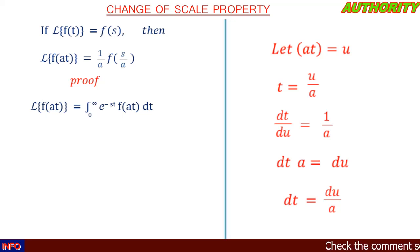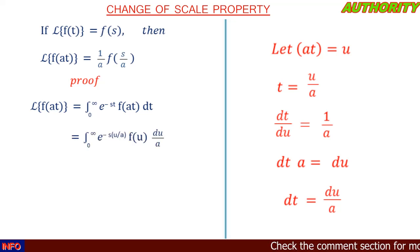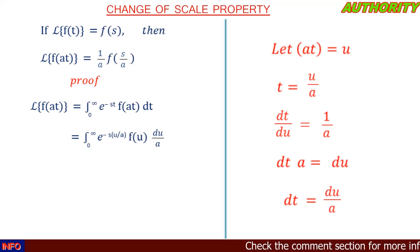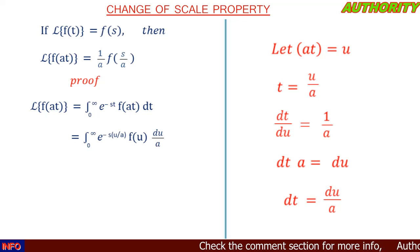We have gotten a new value: at = u, t = u/a, and dt = du/a. Let's substitute these into the integral from zero to infinity of e^(−st) f(at) dt. Substituting: in place of t we write u/a, in place of f(at) we write f(u), and in place of dt we write du/a.